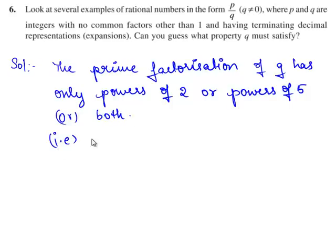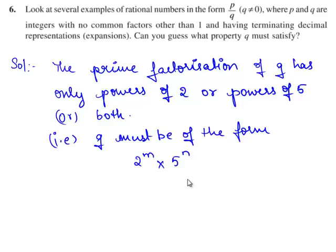That is, q must be of the form 2 power m times 5 power n, where m equals 0, 1, 2 and so on, and n equals 0, 1, 2 and so on.